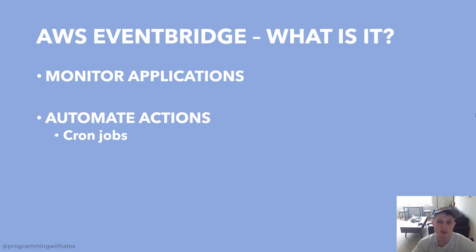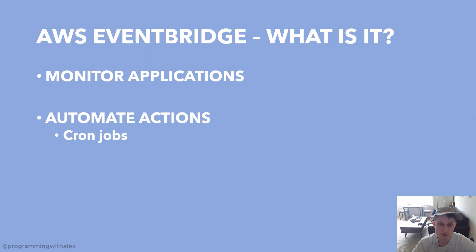EventBridge is what we use to schedule the running of our Lambda function. It uses cron syntax to do so. If you're not familiar with Linux, you can think of Windows Task Scheduler as a similar thing. It just recently replaced AWS CloudWatch, if you're familiar with that.